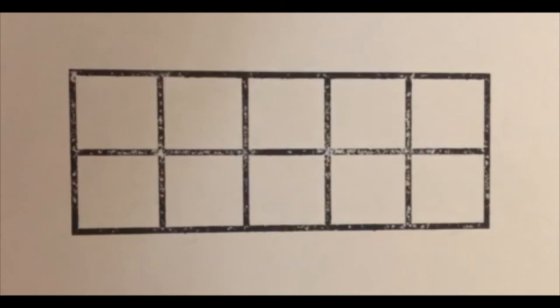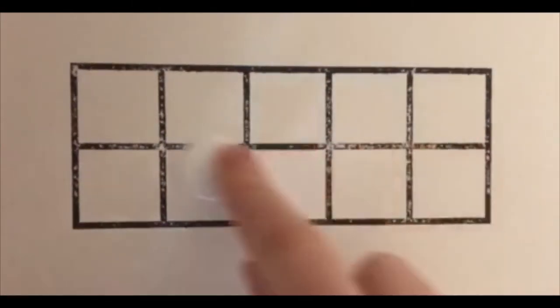One way to get children more familiar with the numbers within 10 is to use something called a 10 frame. This is a 10 frame here. It's just a grid with 10 boxes in it. They could use something like counters to simply fill up the squares and count them out.